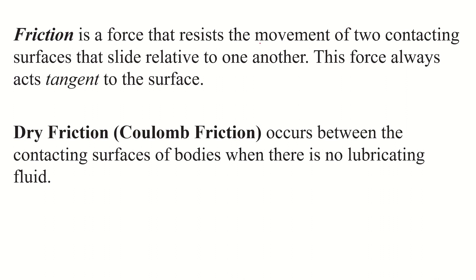Friction is a force that resists the movement of two contacting surfaces that slide relative to one another. Friction always acts tangent to the surface, meaning the force is always parallel to the surface. One very important type is dry friction, also called Coulomb friction. Coulomb friction occurs between the contacting surfaces of bodies when there is no lubricating fluid.